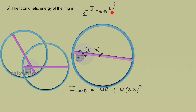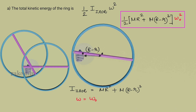Now let us move on to omega. When the finger was here, this line was like this; when the finger came here, this line is like this. When the finger has turned by theta, this line has also turned by theta. So if the finger has angular velocity omega, then this ring also has angular velocity omega, which is given as omega naught in this question. So omega equals omega naught. The total kinetic energy of the ring is half times [MR² + M(R − r)²] times omega naught squared.